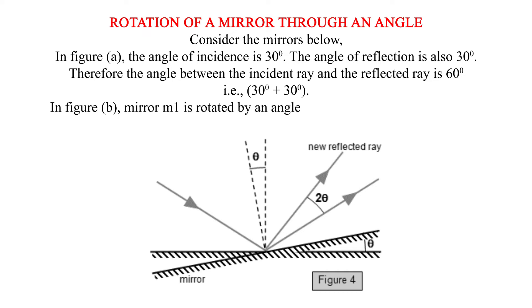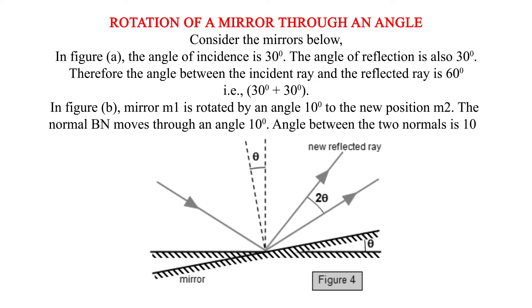In figure B, mirror M1 is rotated by an angle 10 degrees to the new position M2. The normal Bn moves through an angle 10 degrees. The angle between the two normals is 10 degrees.